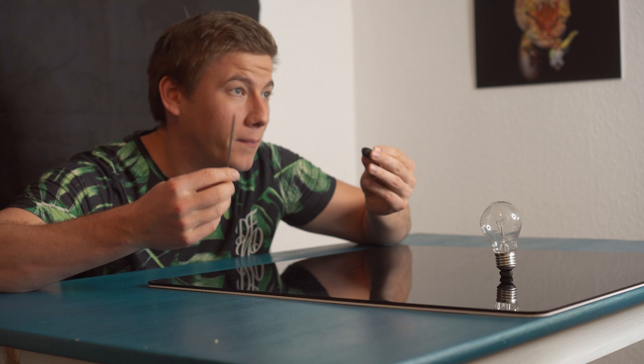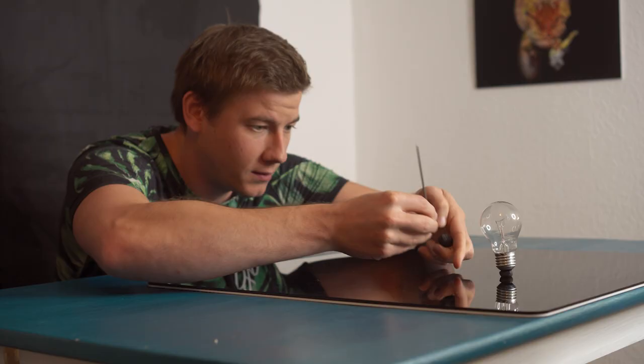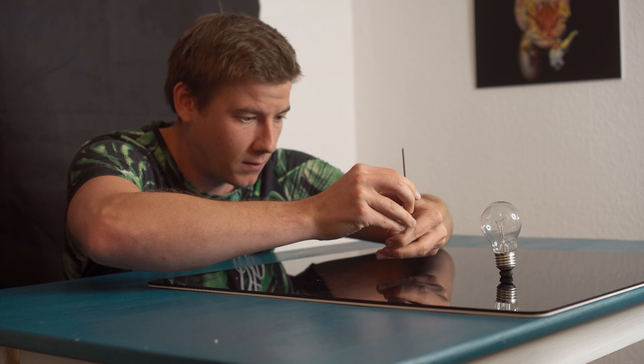Now we just need some putty again or some playdough or whatever you want to fix the sparkler behind the bulb. Let's bend the sparkler a little bit. Maybe like this.